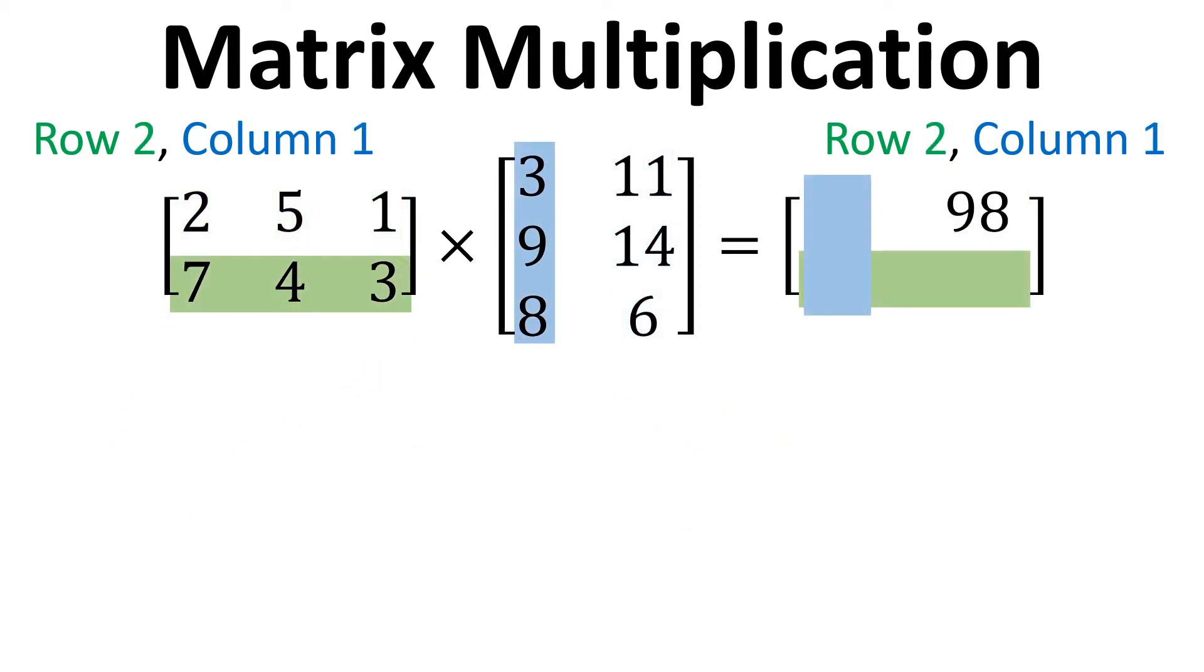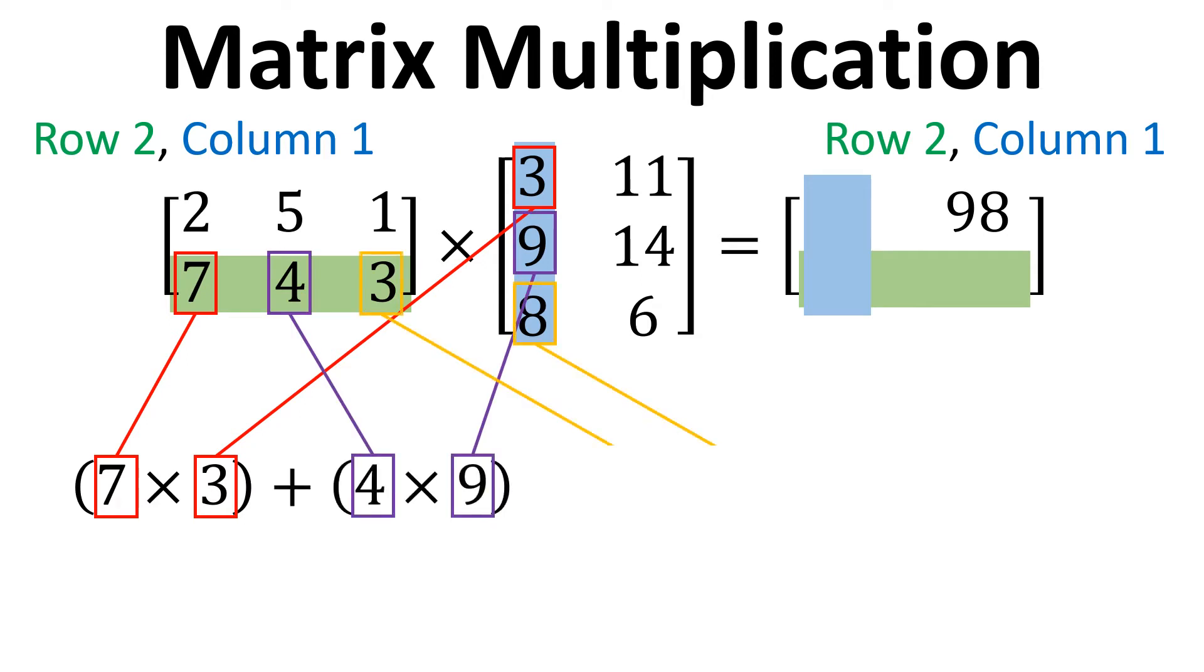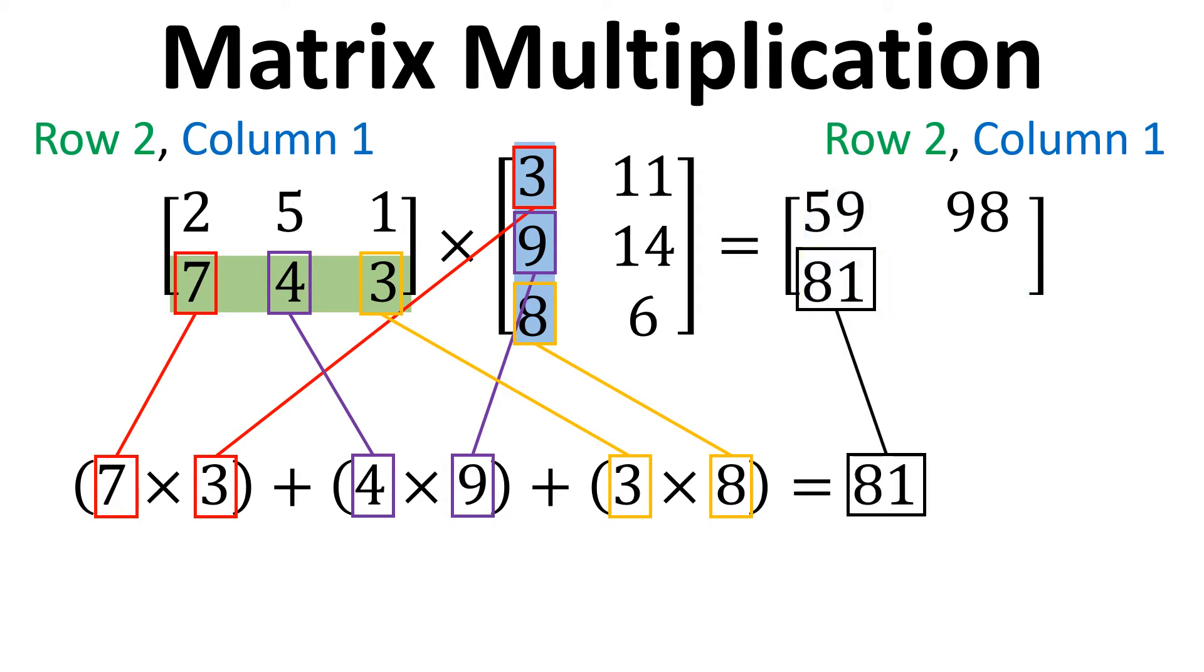Now we move on to row 2, column 1 and it's the same process. We multiply the elements together in turn. So it's 7 times 3, then it's 4 times 9, 3 times 8 and if we add that up we get 81. And so now we've got the element for row 2, column 1.